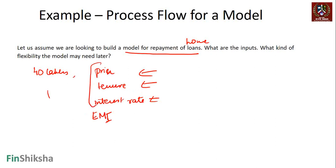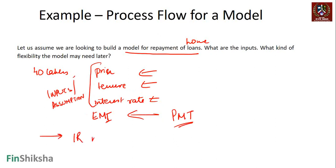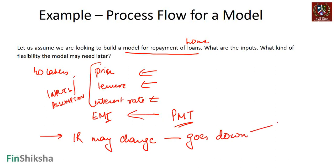So these are my inputs or assumptions, and then I can have functions which basically solve for this EMI. The function is called PMT. Now what are the flexibilities that I might need later? The flexibility is that tomorrow the interest rate may change. If the rate goes down, I have two options: I can reduce the tenure and keep EMI the same, or I can reduce EMI and keep the tenure the same.